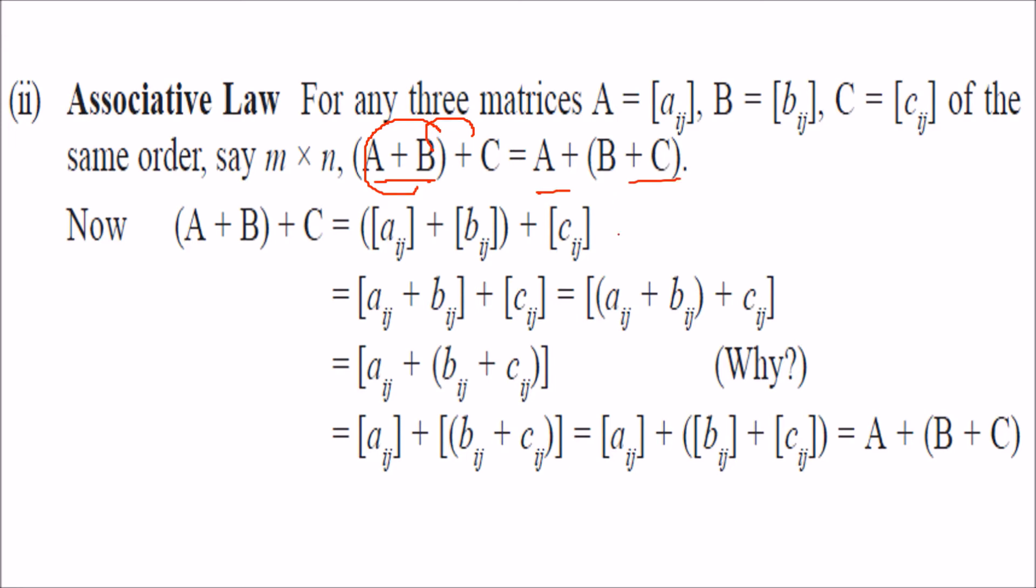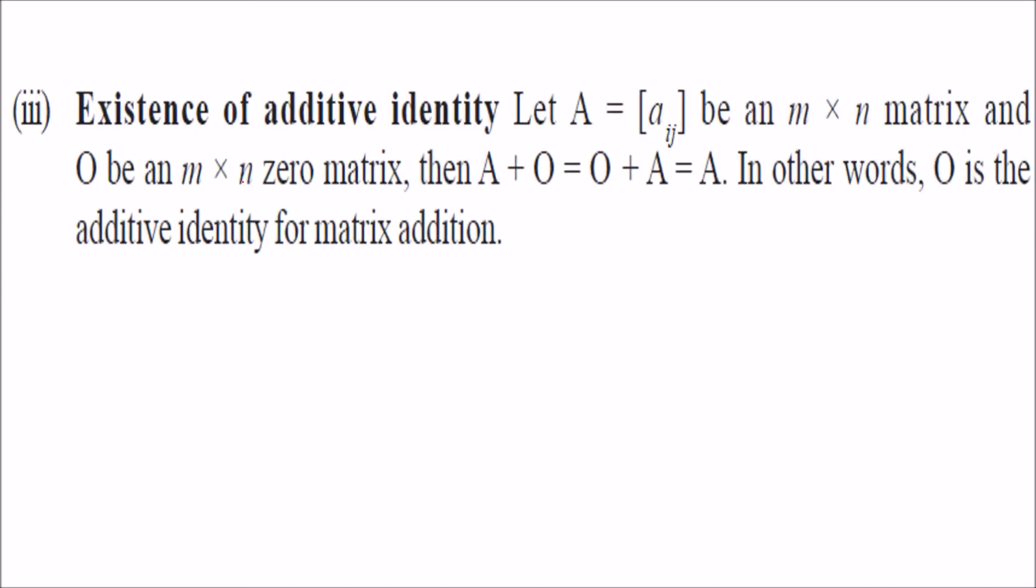This is the same explanation. You are actually adding the element inside, so this element, that is 2 plus 3 plus 5, is nothing but if you add these two with this or 3 plus 5 with this, the result remains same.